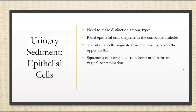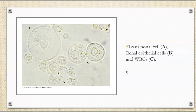We need to make a distinction amongst urinary epithelial cells simply because the epithelial cells themselves are going to arise from different locations. We want to be sure that we know where they're coming from because that's going to tell us the patient's disease state. Renal epithelials will originate in the convoluted tubules, transitional in the renal pelvis to the upper urethra, and squamous from the lower urethra or vaginal contamination. You can see transitional cell A, renal epithelial cell B, and then white cells are the smallest.